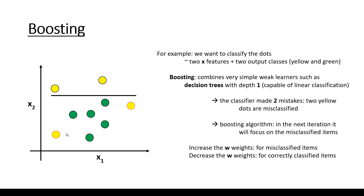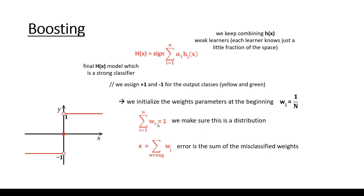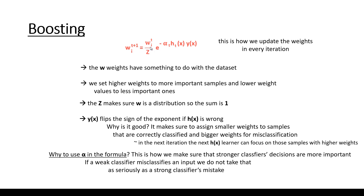We have to come up with a classification algorithm that correctly classifies those data samples. The Z factor makes sure that W is a distribution — the sum of all W_i weights must equal 1, which is why we have this normalization factor. Then we have the y(x) function, which basically flips the sign of the exponent if h(x) is wrong. We have to make sure that if a given sample was misclassified, we increase the weight, and if it was classified correctly, we decrease the weight.